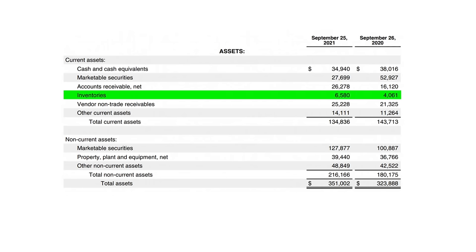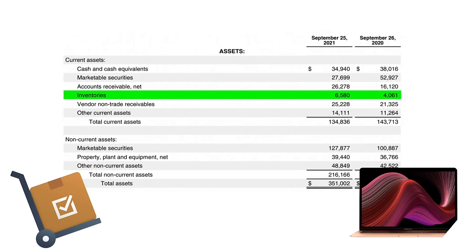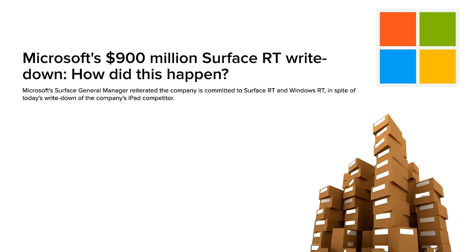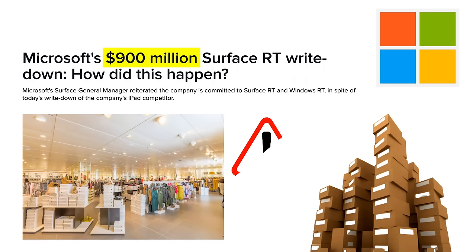The next line is inventories — products that are completed and ready to be sold but have yet to be sold to a customer. For Apple, this would be iPhones, iPads, and MacBooks that have been manufactured but not yet sold. As an investor, you want to make sure inventory levels aren't growing significantly, as it can be a sign the company is having difficulty selling its products. Back in 2013, Microsoft took a loss of nearly $1 billion on a product because they overestimated demand. For retailers and department stores, this inventory line is extremely important because misplanning inventory can have devastating consequences.